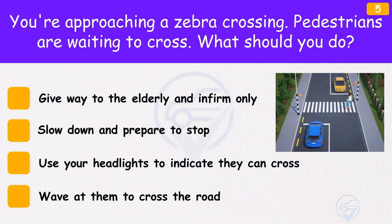You're approaching a zebra crossing and pedestrians are waiting to cross. What should you do? The answer is 'Slow down and prepare to stop'. As you approach a zebra crossing, look for pedestrians waiting to cross. Where you can see them, slow down and prepare to stop. Be especially careful of children and older people who may have difficulty judging when it's safe to cross.